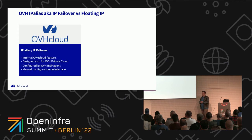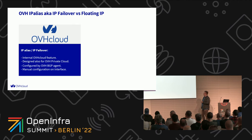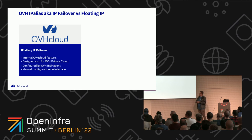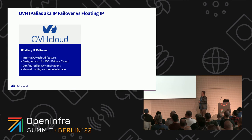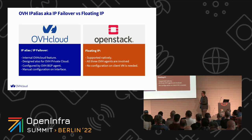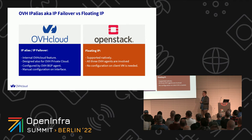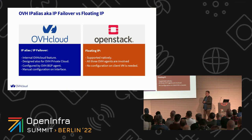A few years earlier, we implemented at OVH something like floating IPs — our own solution implemented as a Neutron service. It is IP Failover (the marketing name) or IP Alias (the internal technical name). The idea was to allow customers to attach IPs to physical servers and bare metal instances. Now we are going with OpenStack floating IPs, and we decided to keep both solutions — we support both. The biggest difference is that with IP Aliases, the customer needs to add the IP manually on the interface, whereas with floating IPs, everything is done by routing that we configure, and it's transparent for our customers — they just need to attach the IP on the panel.